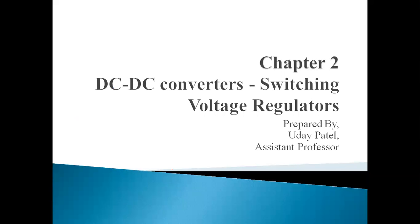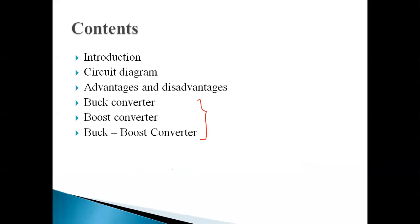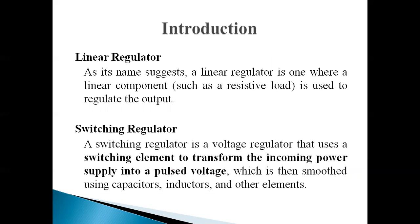DC to DC converters means that in that circuit, input voltage and output voltage both are DC voltage. First of all, we studied about the linear voltage regulator. As its name suggests, a linear regulator is one where a linear component is used to regulate the voltage. Linear component means resistive load. We call it a resistive load because it follows Ohm's law — V = IR. If we plot the graph between voltage and current for a resistive load, the graph is linear, that's why we call it a linear regulator.